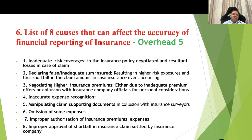Eight causes that can affect the accuracy of financial reporting of insurance costs in the P&L account: number 1, inadequate risk coverage in the insurance policy and resultant loss of claims; number 2, declaring false or inadequate sum insured; number 3, negotiating higher insurance premiums due to collision with insurance company representatives for personal considerations; number 4, inaccurate expense recognition; number 5, manipulating claims supporting documents in collusion with insurance surveyors; number 6, omission of some expenses; number 7, improper authorization of insurance premium expenses; number 8, improper approval of short-paid insurance claims settled by the insurance company. All these can lead to inaccuracy in financial reporting of the insurance account.